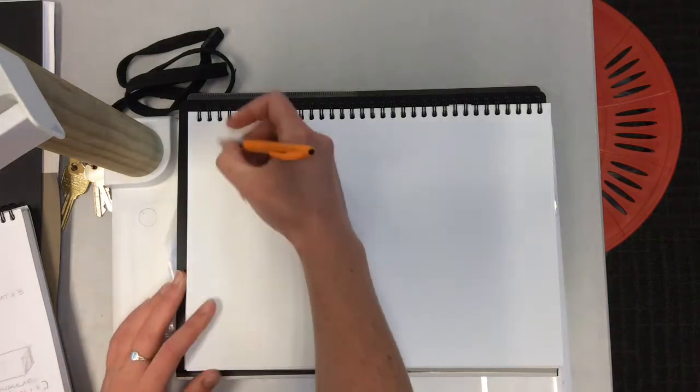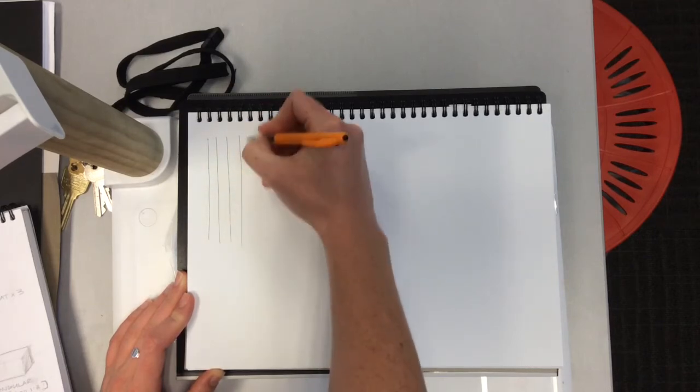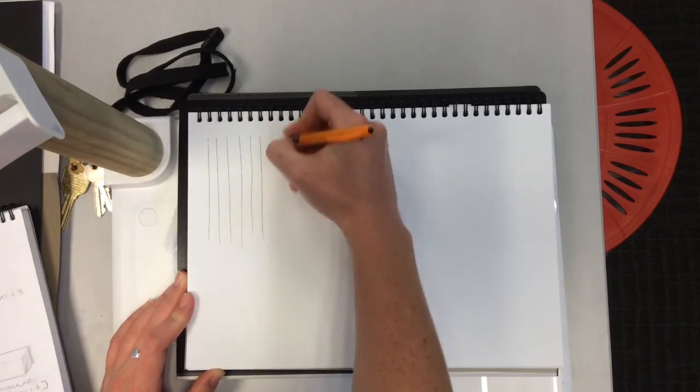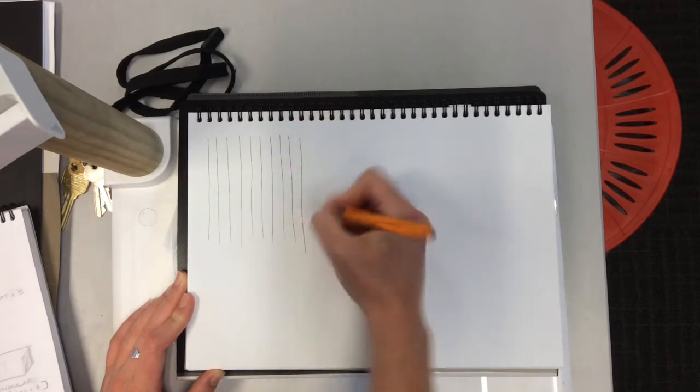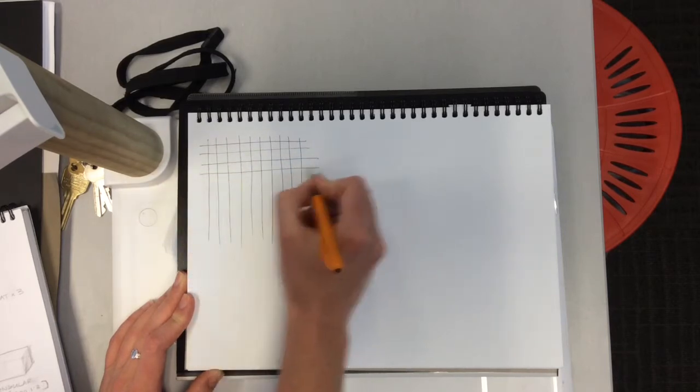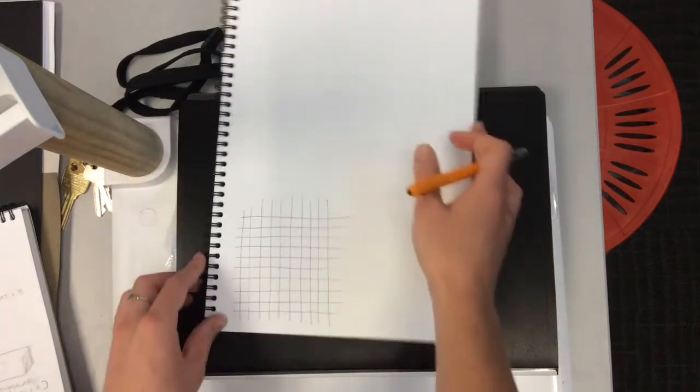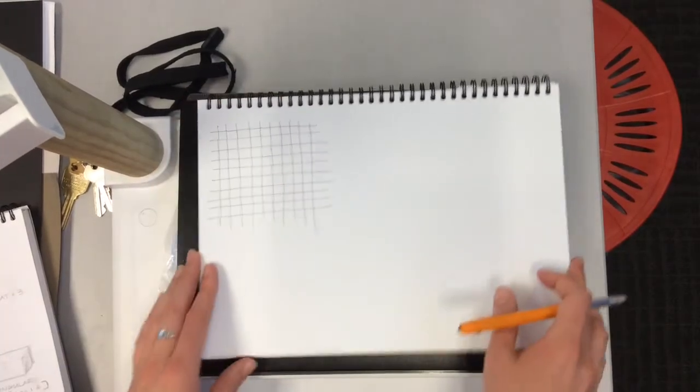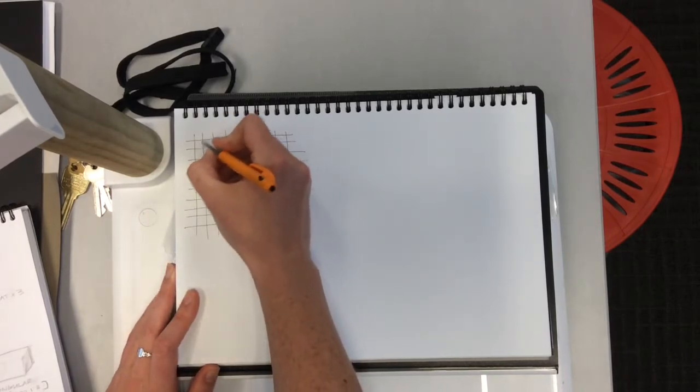First, we're going to set up parallel lines about a centimeter apart, drawing about 10 of them, and then we'll draw horizontal lines. You can move or turn your page if you find you're better at drawing vertical lines rather than horizontal, but I'll keep my page still.